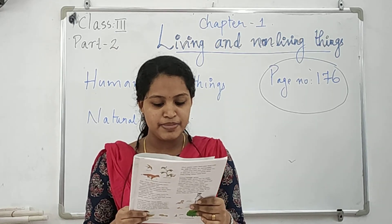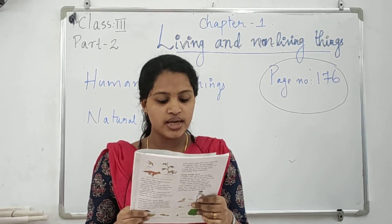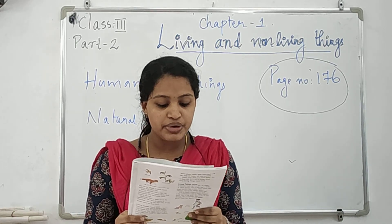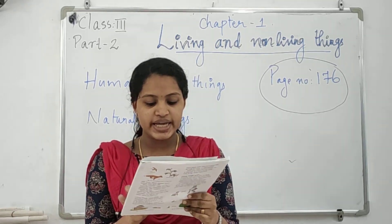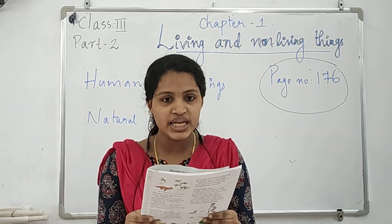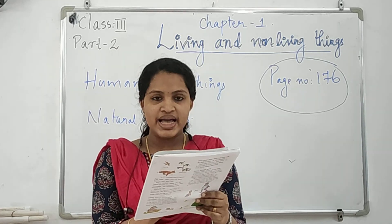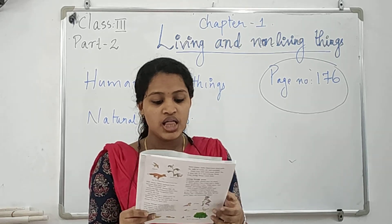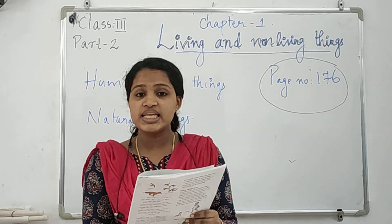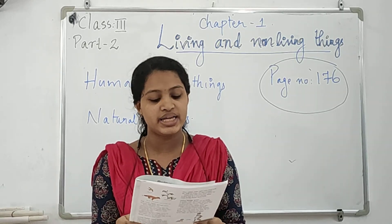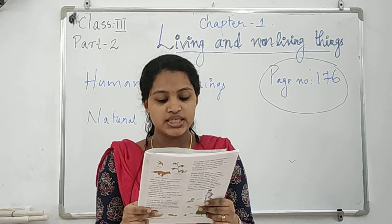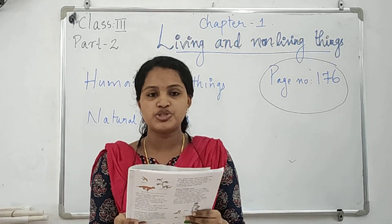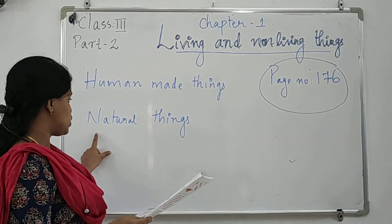Things like animals, plants, rocks, clouds, the sun, the moon and stars have not been made by humans. Nature gave these things to us. They are called natural things. You please note and underline that point.